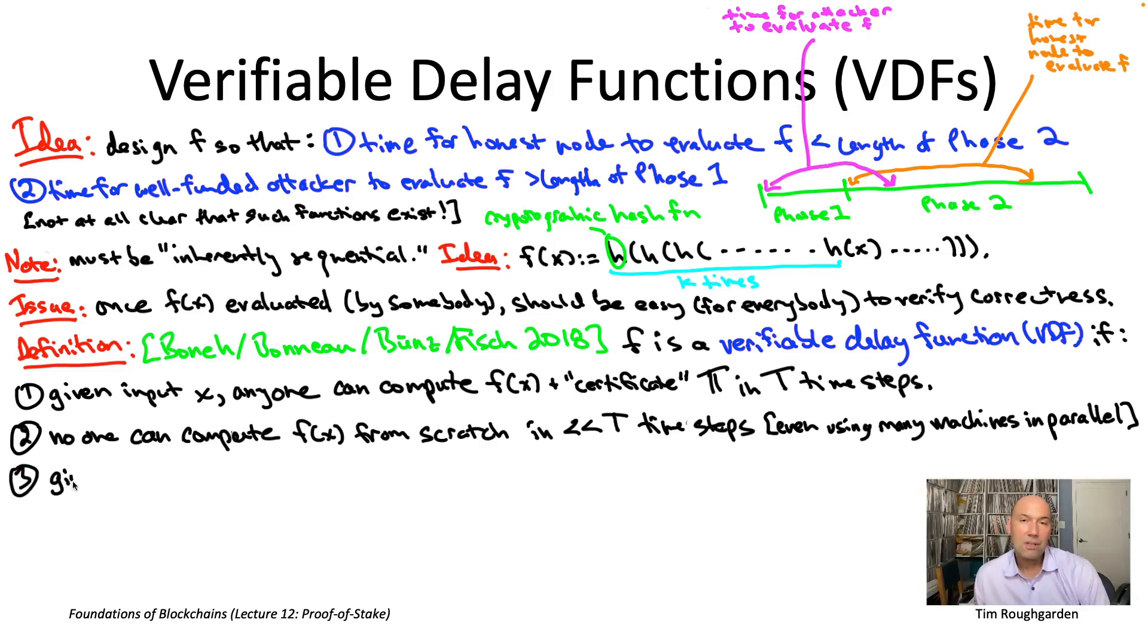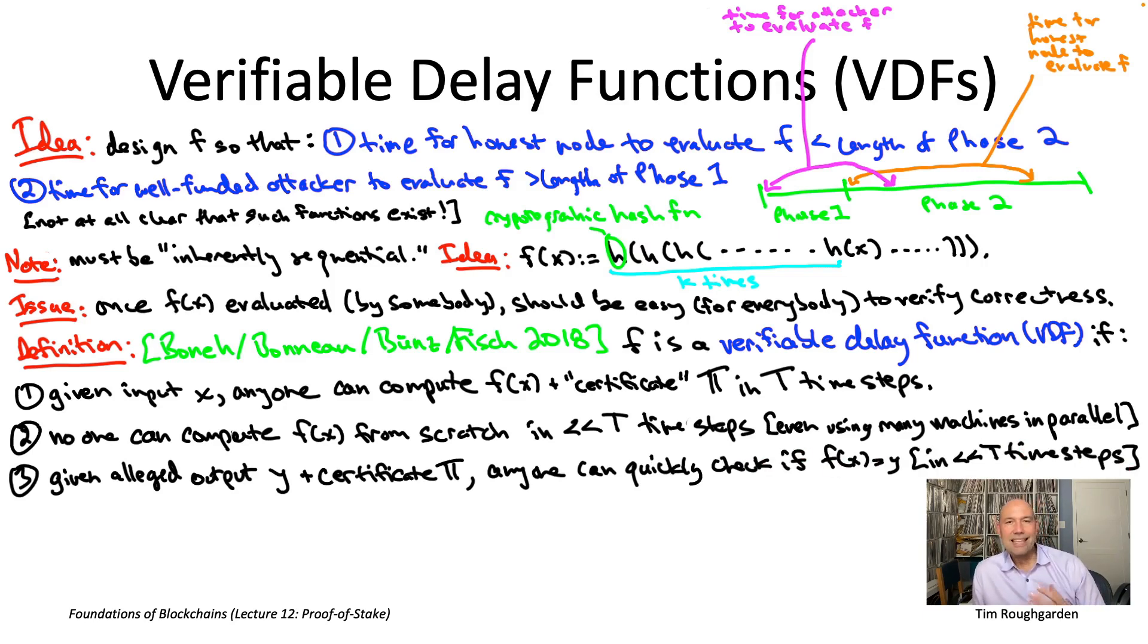So again, this function little f is going to be in some sense an inherently sequential function. The third property is the efficient verification property.